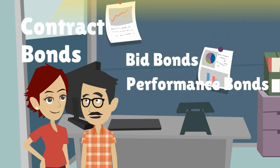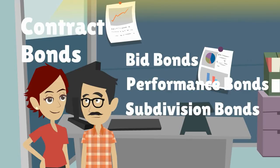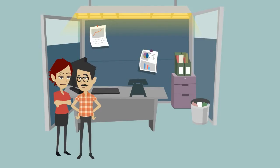There are several types of contract bonds such as bid bonds, performance bonds, and subdivision bonds among others.